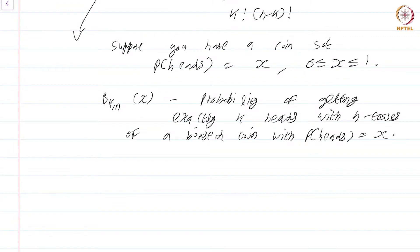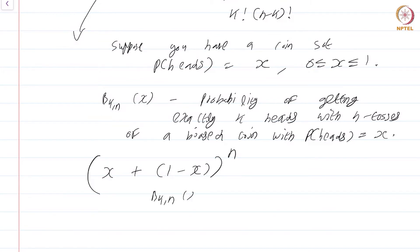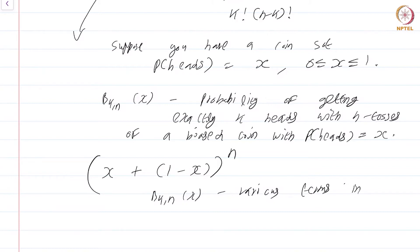If you are not comfortable with probability, there is another way to remember what b_{k,n}(x) is. Just look at (x plus 1 minus x) to the power n. Then b_{k,n}(x) are the various terms — not just the coefficients, but the various terms — in the binomial expansion.